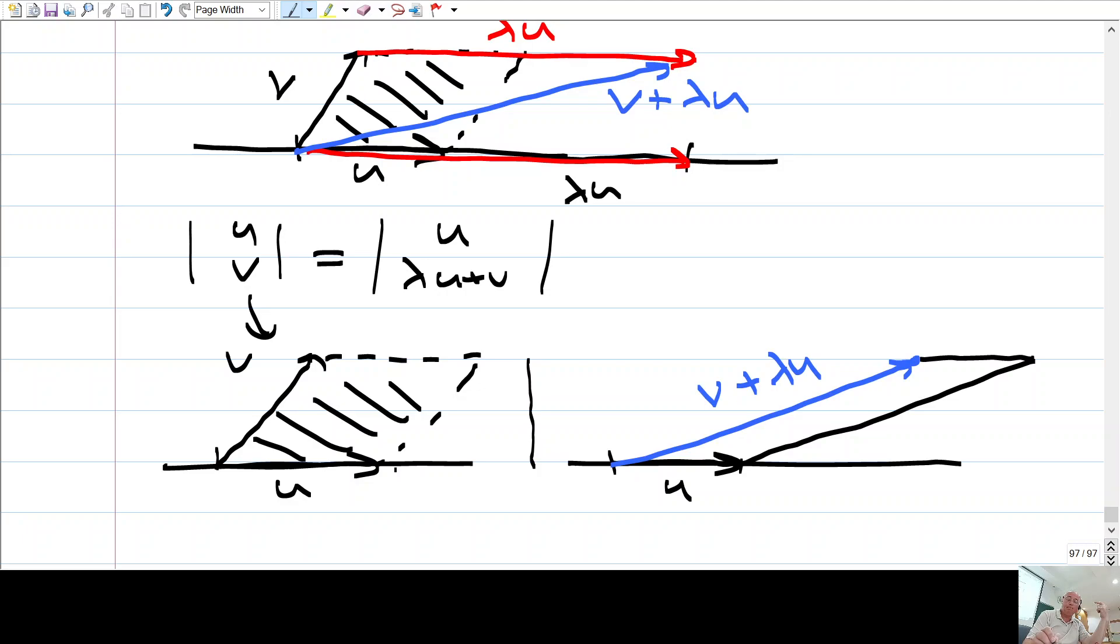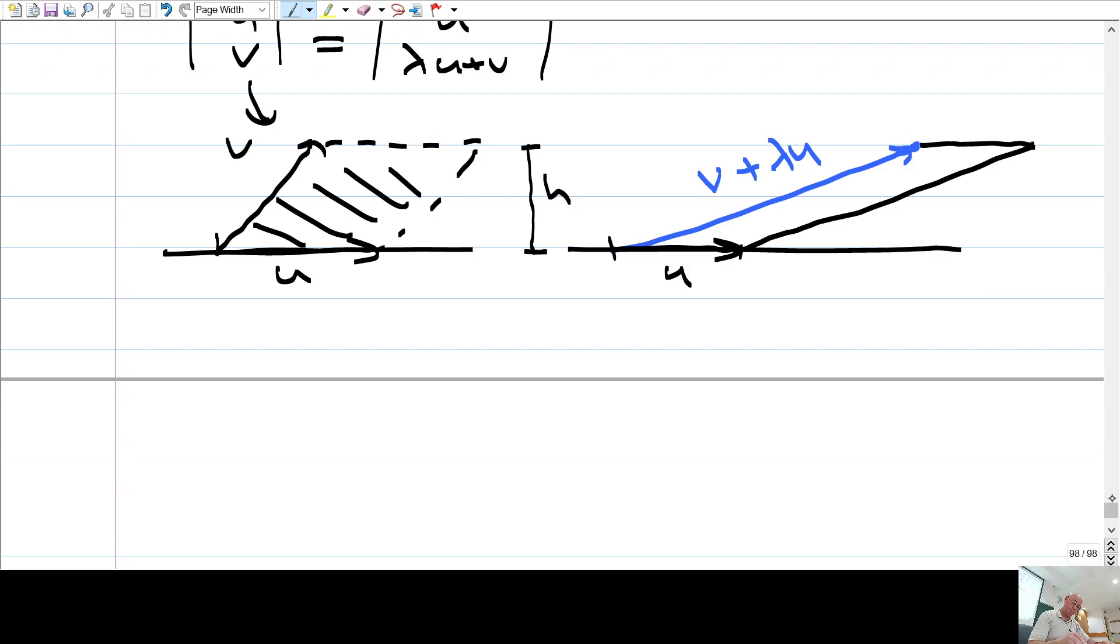So for these two parallelograms the areas are the same because base lengths are the same and the heights are the same. Right? This is the height. So adding a multiple of a row to another row doesn't change the volume or area. It just bends the object. Okay? But the area is preserved. Base length and height doesn't change. But it just goes like this. But the area doesn't change. Tamam mı? Fikir bu. Okay.